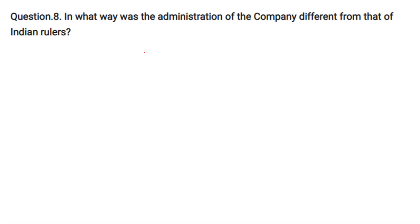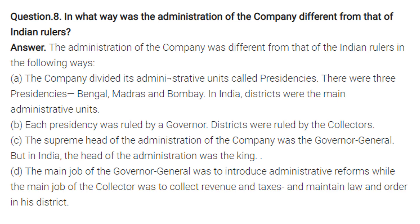In what way was the administration of the company different from that of Indian rulers? The company divided its territories into administrative units called presidencies — Bengal, Madras, and Bombay. Districts were the main administrative units; each presidency was ruled by a Governor, and districts were ruled by Collectors. The supreme head of the company's administration was the Governor-General, whereas in India at that time the head was the king. The Governor-General's main job was to introduce administrative reforms, while the Collector's job was to collect revenue and maintain law and order.